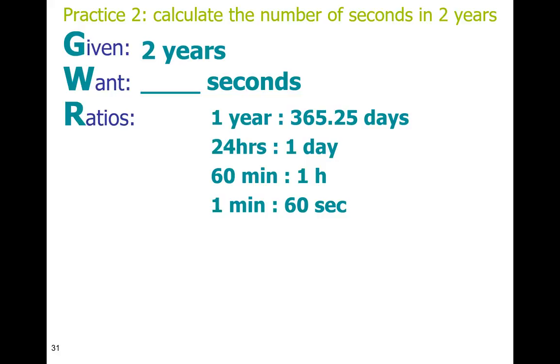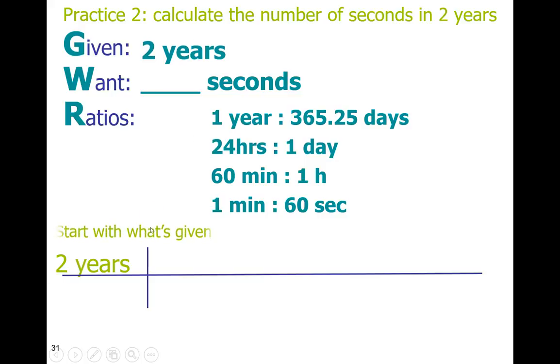Now let's start the problem. We start the problem the exact same way every time with the given over one. So this unit in the given is a super clue. This clue tells us if I have the word years here, I also need the word years here. So as I'm looking at all my ratios, I'm going to take this ratio that says one year and put it in the bottom because I want the words to match up diagonally. Now I'm going to take this number 365.25 days and put it in the numerator. So here I have a conversion from years to days.